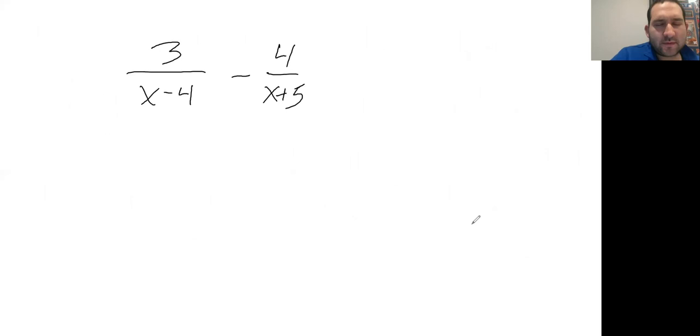Now let's look at one where we have some subtracting. This problem: 3/(x-4) - 4/(x+5). Similar to the last problem where there's no factoring - each denominator is different, so that means the LCD is each of these binomials written together.